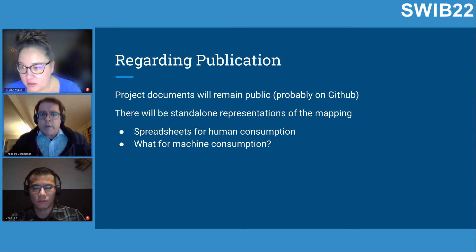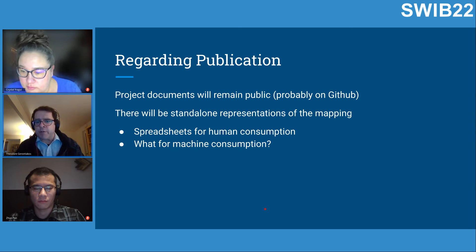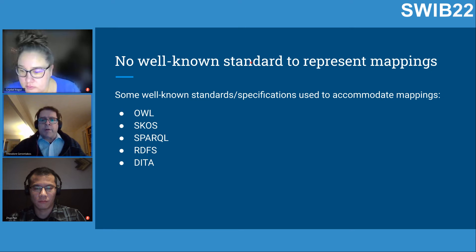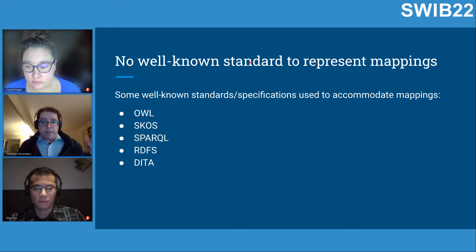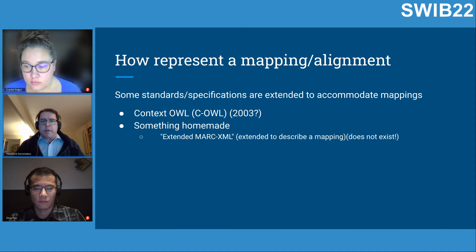On publication: project documents will remain public on GitHub, with standalone representations of the mapping — at minimum, spreadsheets for human consumption — though we're still deciding how to offer the mappings for machine consumption. There are a number of standards or specifications that could accommodate the mappings, such as SPARQL, RDFS, or DCAT. There are also lesser-known standards for mappings, and some standard specifications could be extended — like OWL, or even MARC XML.